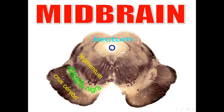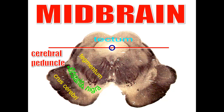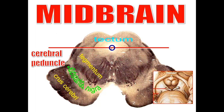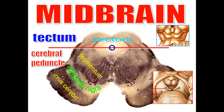Now the midbrain. This is a cross-section of the midbrain. The midbrain has a cavity called the aqueduct of Sylvius or cerebral aqueduct. This cerebral aqueduct divides the midbrain into an anterior part and a posterior part. The anterior part is called the cerebral peduncle, and the posterior part is called the tectum, which contains four colliculi. The trochlear nerve comes from below the inferior colliculus.